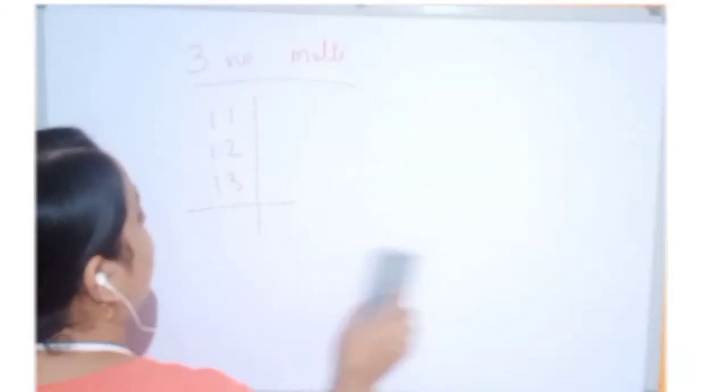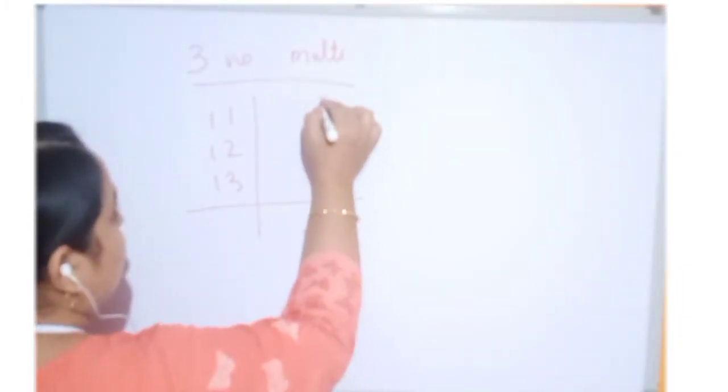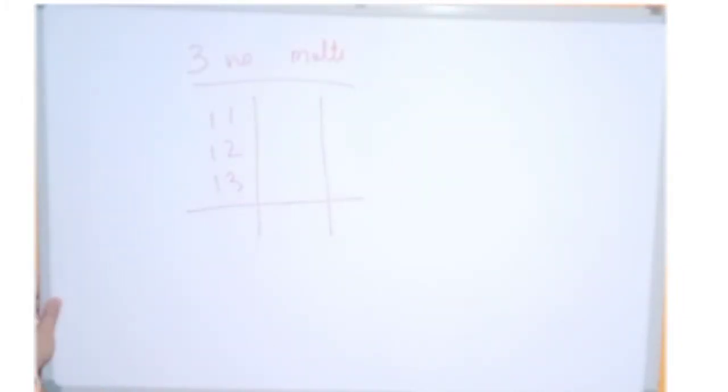There are three steps to get the answer. We will just do the balancing line so that it will be easier for us. First, what we have to do, get any one number from this, any one. So, we are taking 11.